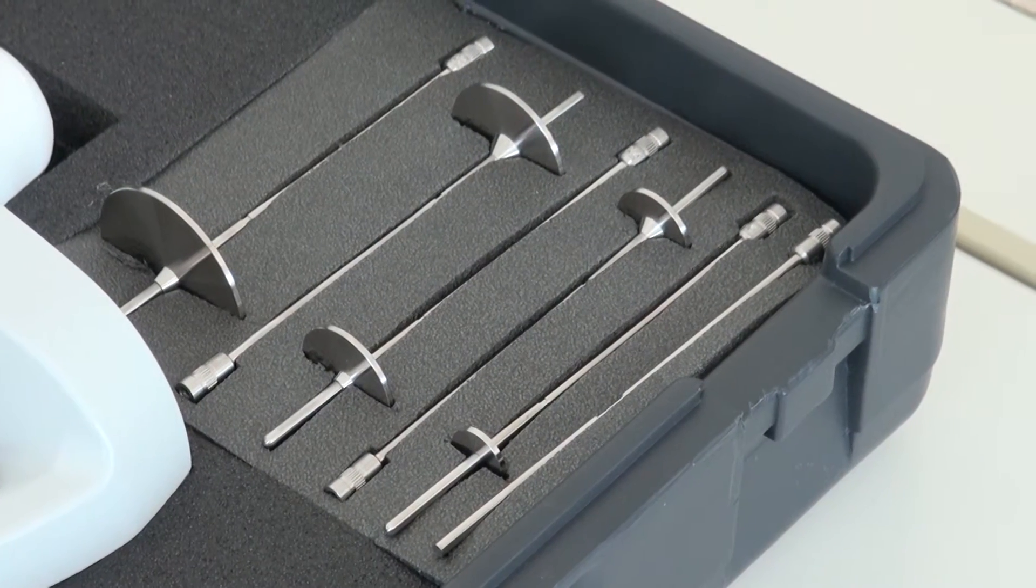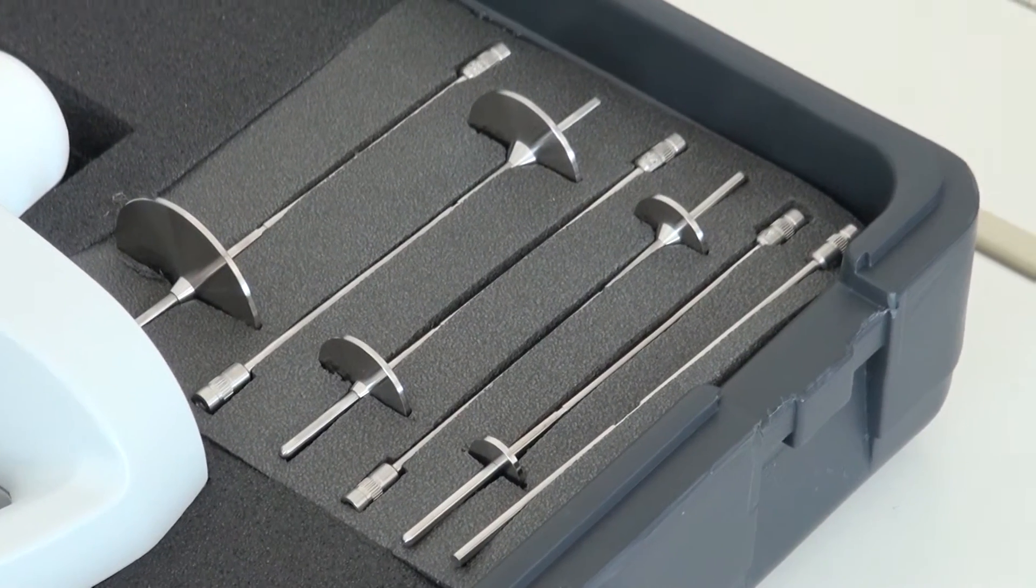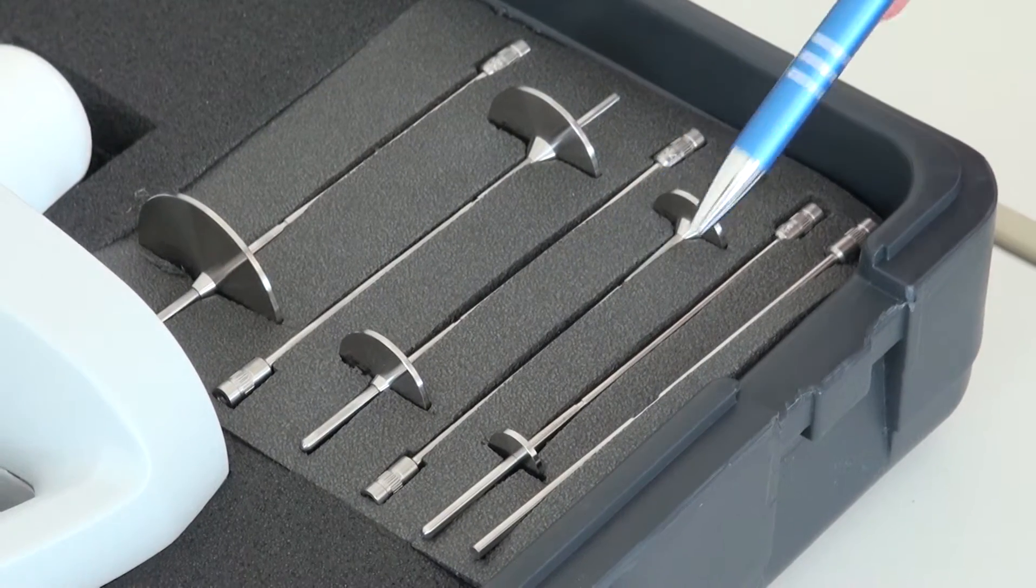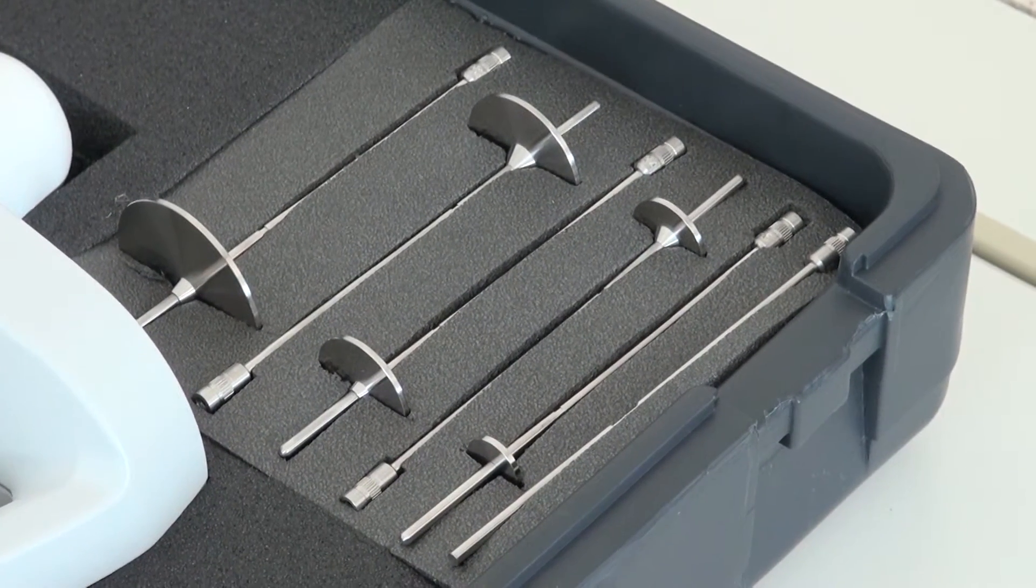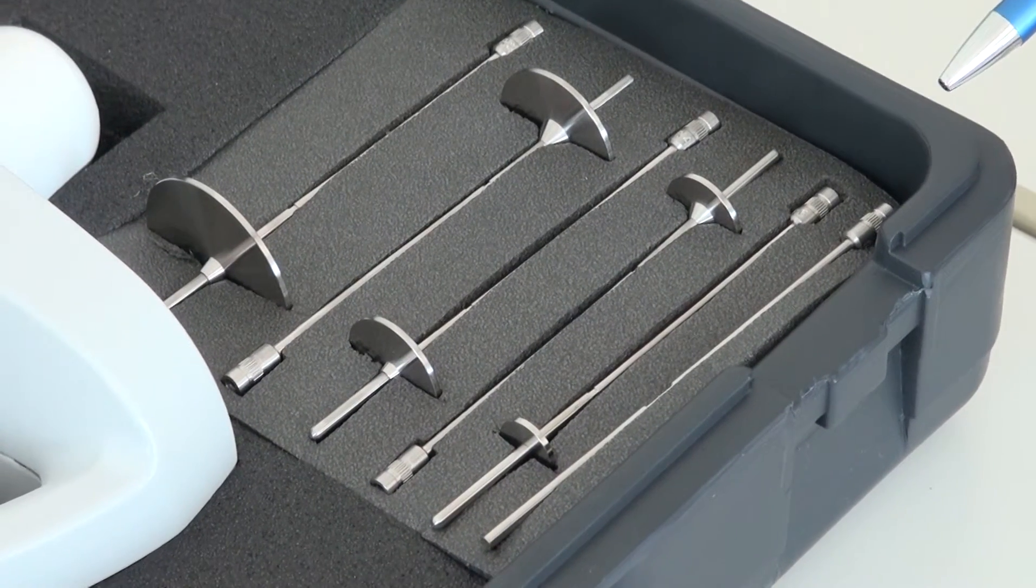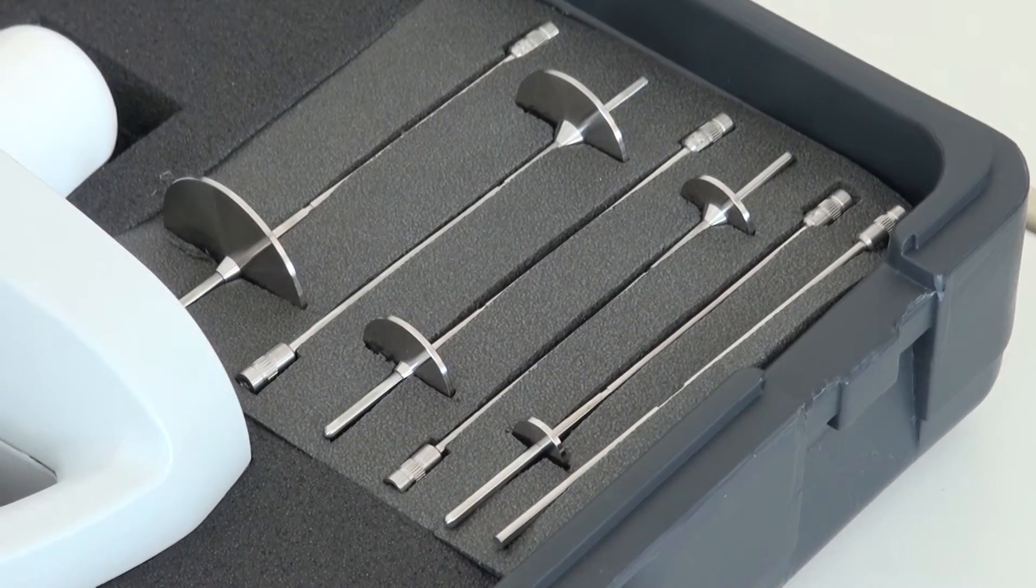The set consists of six rotation bodies, five of them are in the shape of discs and one is in cylindrical shape. Optionally, a further rotation body is available which can cover the lower measuring area.